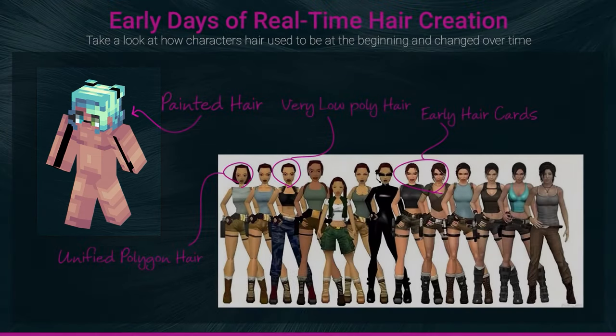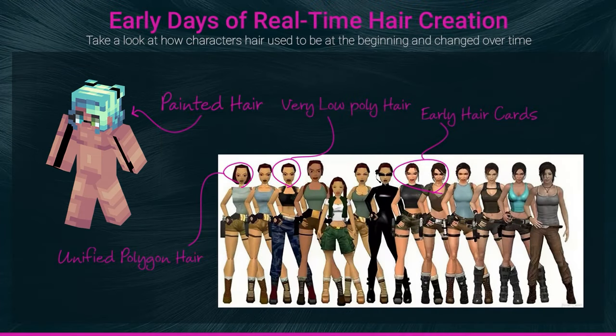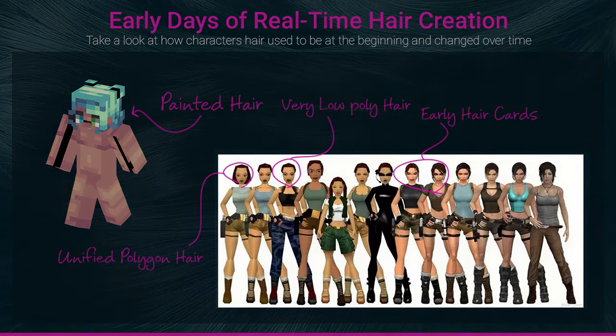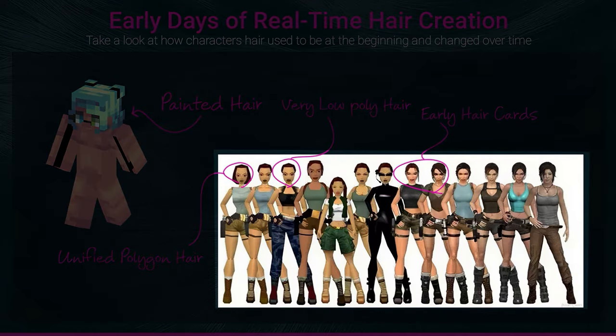After a decade, when GPUs became stronger and more capable of handling more polygons and draw calls, artists came up with the idea to add some polygons to the model that represent the solid shape of the hair. Take a look at the evolution of Lara Croft from Tomb Raider — we have some polygons here that are unified to the model. It was a pretty good idea at the time.